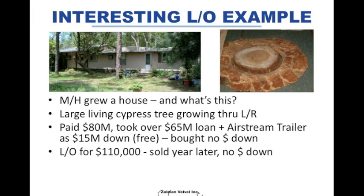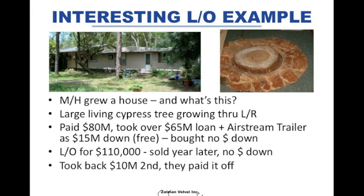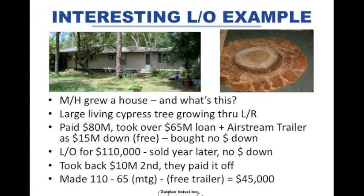I then proceeded to find a lease optioner very quickly, because the property was on five acres and had a huge workshop. I lease optioned it to the buyer for $110,000. They wound up closing on the lease option one year later, and I sold it to them for no money down — I took a $10,000 second mortgage and brought them to a bank, and they financed a first with $100,000. So I bought the property for no money down, sold it for no money down, and took back a $10,000 mortgage which they eventually paid off about a year or two later. I wound up making $45,000 on it.